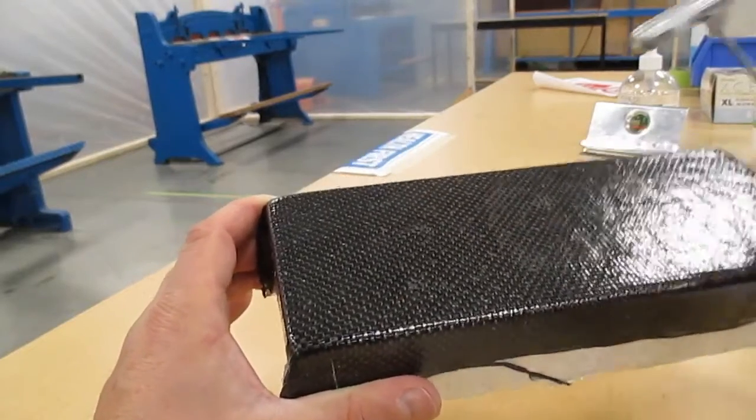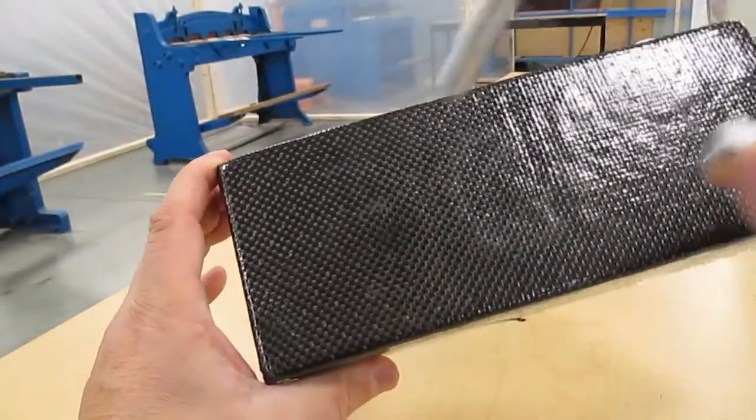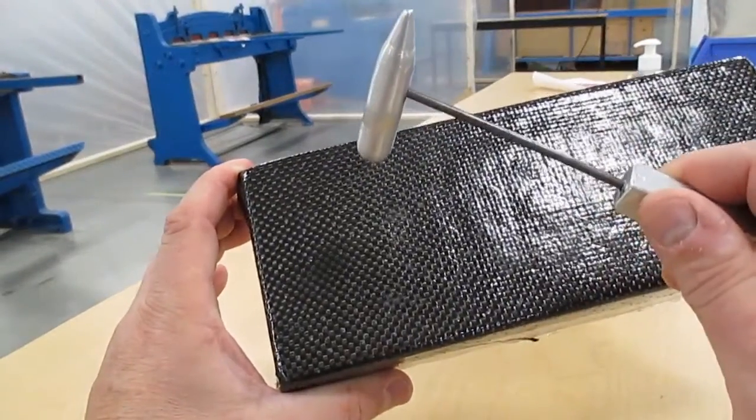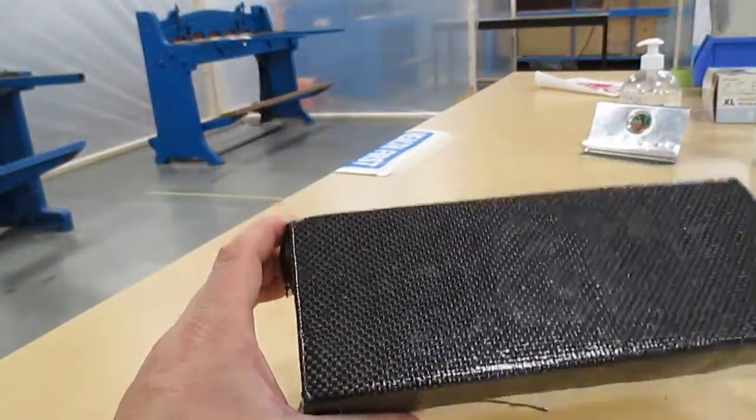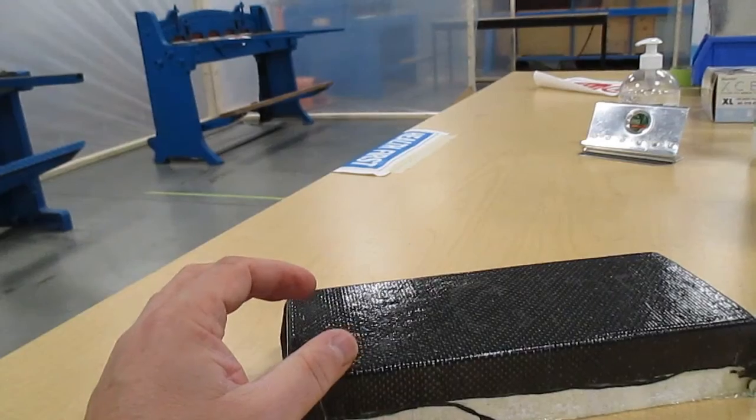So what we want to do once we've got an idea that maybe there's some delamination in here is we want to start to map it out. We're going to get some sort of a document.